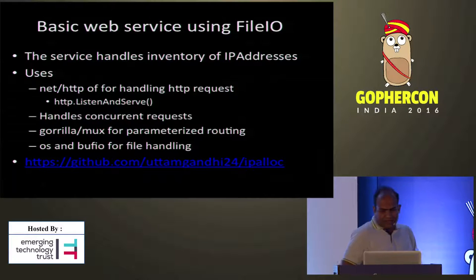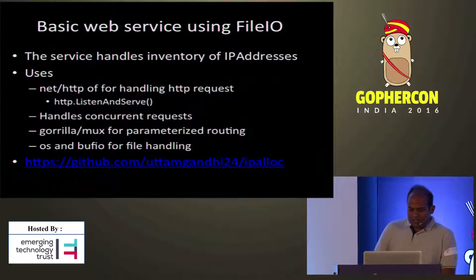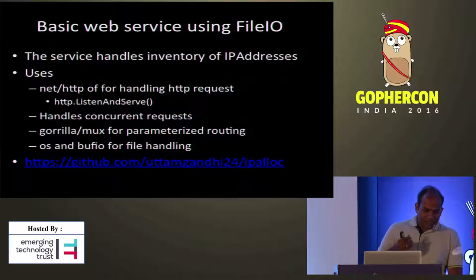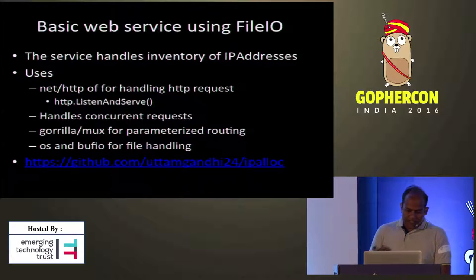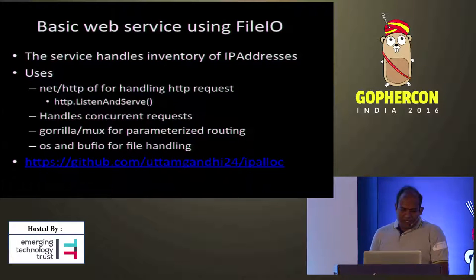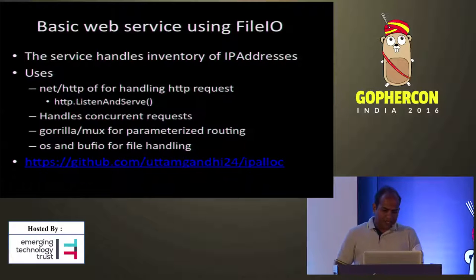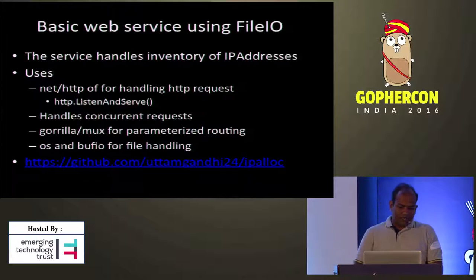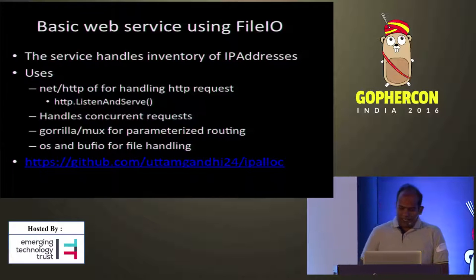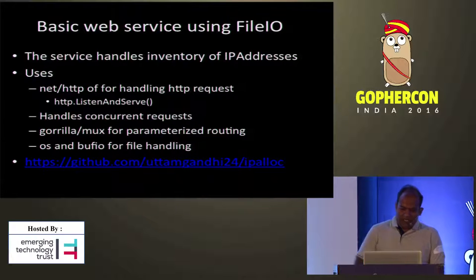We'll see a basic web service. This web service handles an inventory of IP addresses — you can store and fetch IP addresses. It uses net/http's ListenAndServe, which handles concurrent requests. I also use Gorilla Mux for parametrized routing, because the standard library net/http doesn't provide that. OS and bufio are used just for file handling. The code is available on the link I provided.